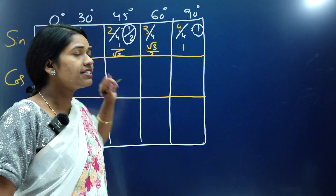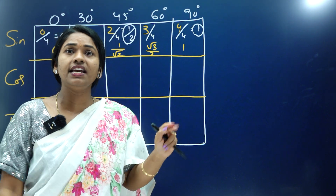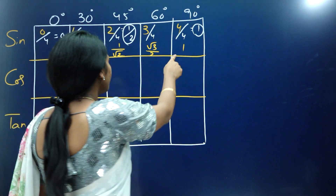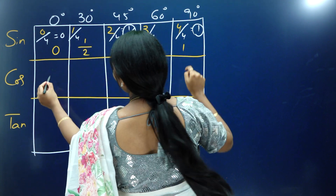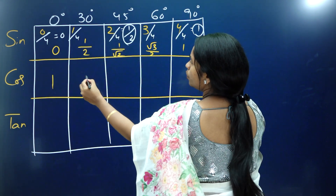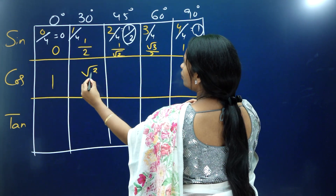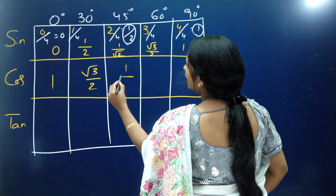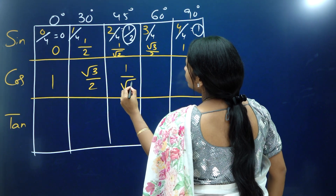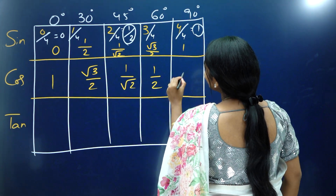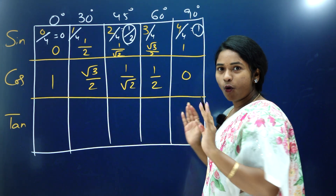Cos values are very easy — just write the sine values in reverse order: 1, √3/2, 1/√2, 1/2, 0.